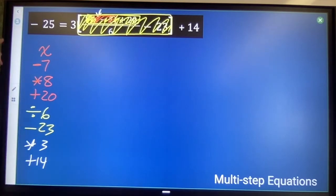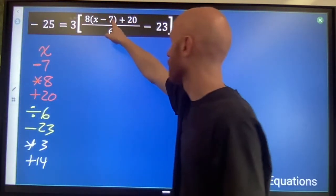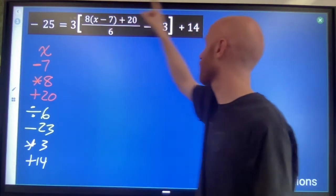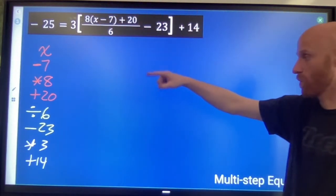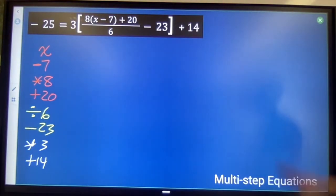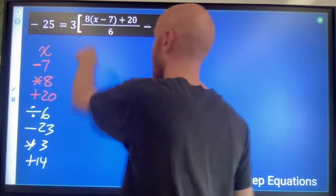That's everything that's happening to the x. All these steps: minus 7, times 8, plus 20, divide by 6, minus 23, times 3, plus 14. Seven steps. And after all of those steps happen to x, this is where we end up: negative 25.